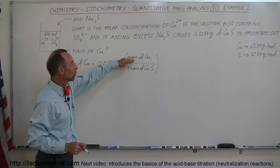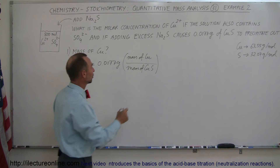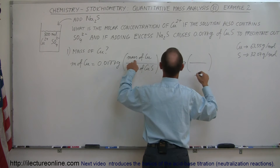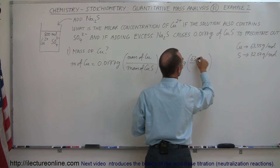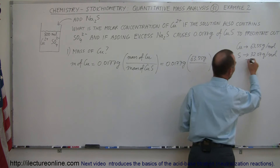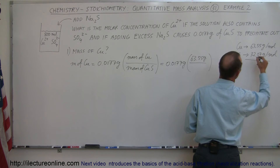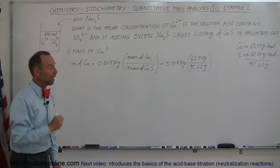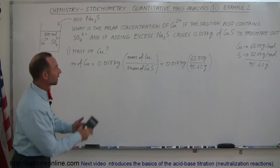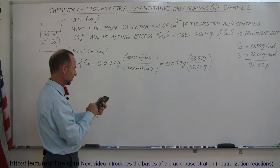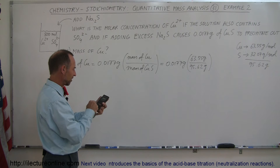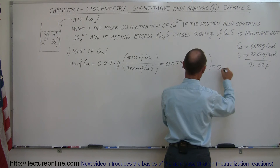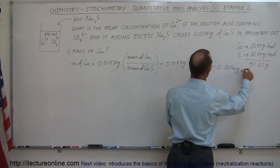That gives us the amount of copper as a ratio of the whole compound times the mass of the whole compound. So this equals 0.0177 grams times the molar mass of copper, 63.55 grams, divided by the total molar mass. We add these up: 63.55 plus 32.07 gives us 95.62 grams for copper sulfide. Using a calculator: 0.0177 times 63.55 divided by 95.62 equals 0.01176 grams of copper.